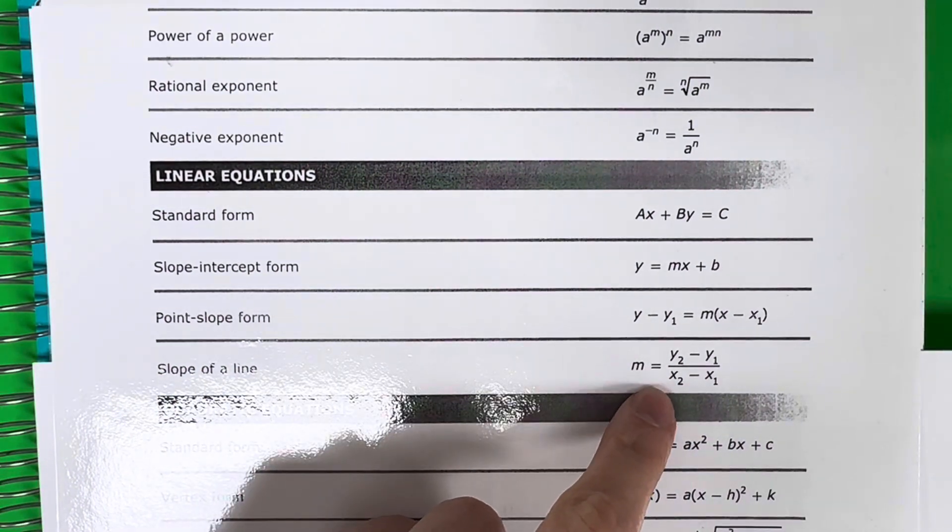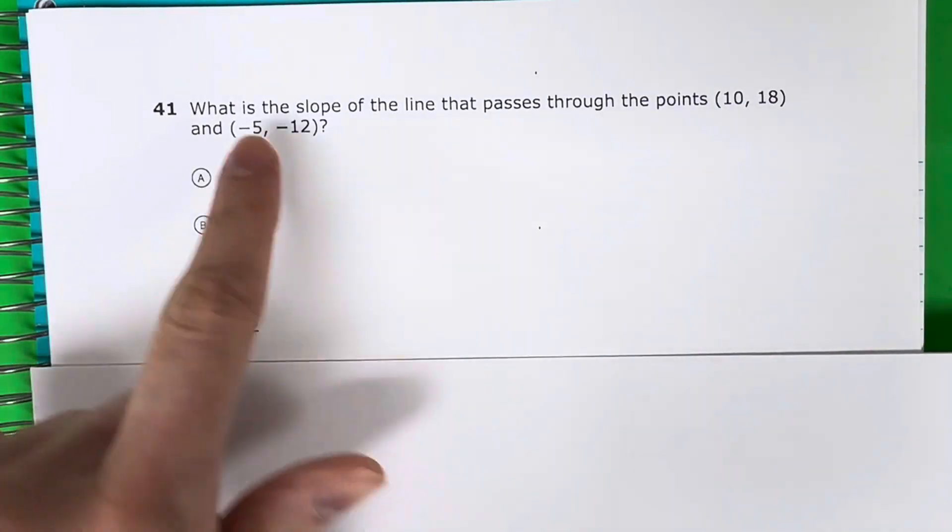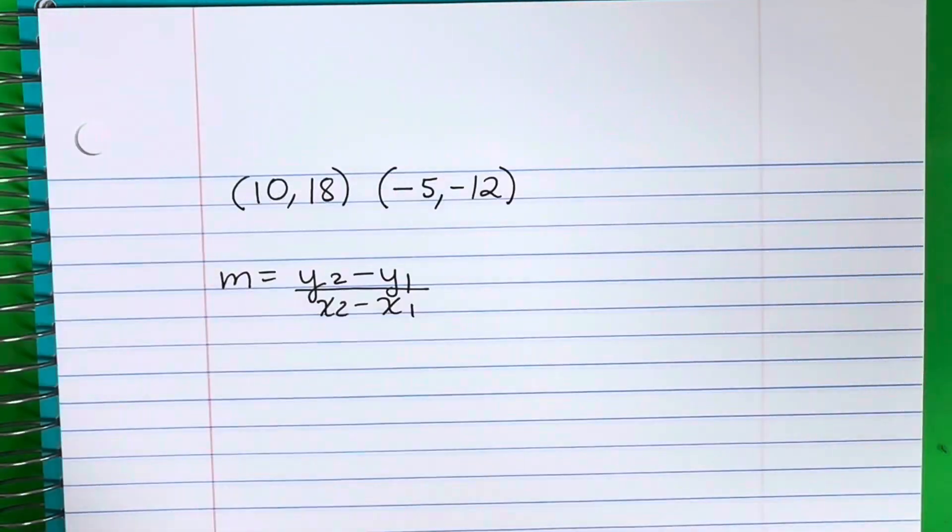M equals y2 minus y1 divided by x2 minus x1. Let's write that down on our paper. Copy these points and write that formula.